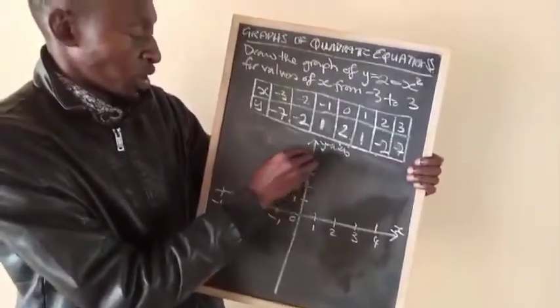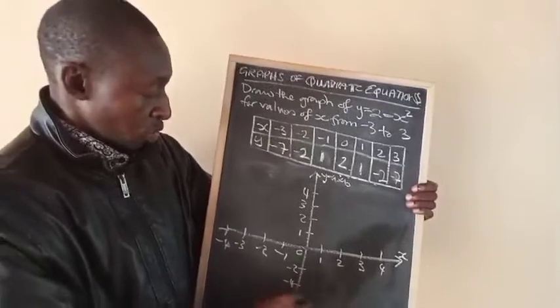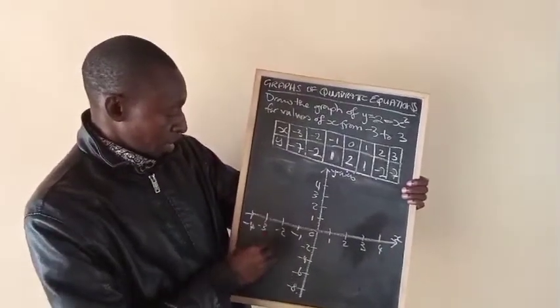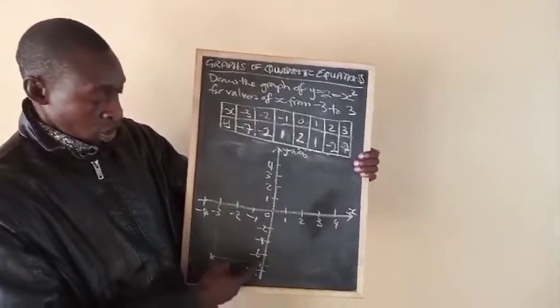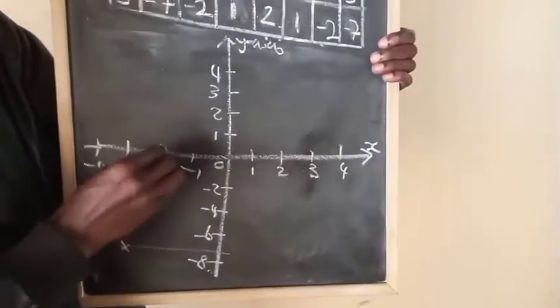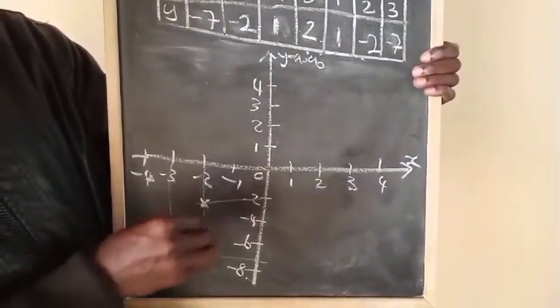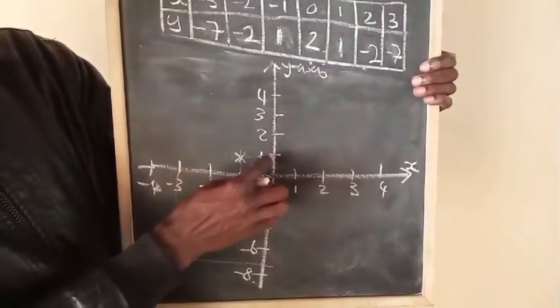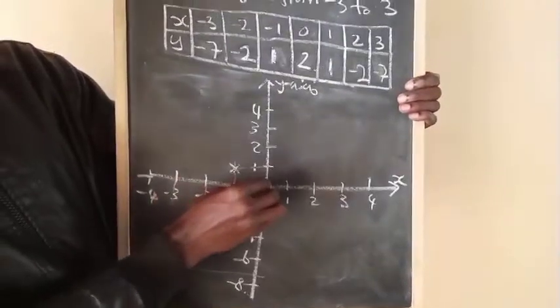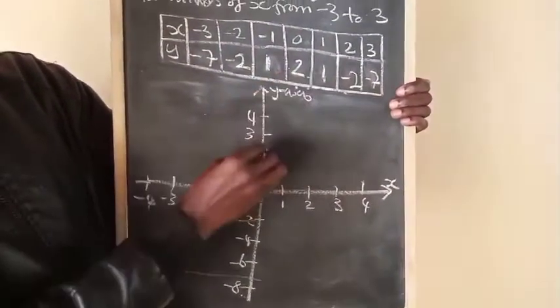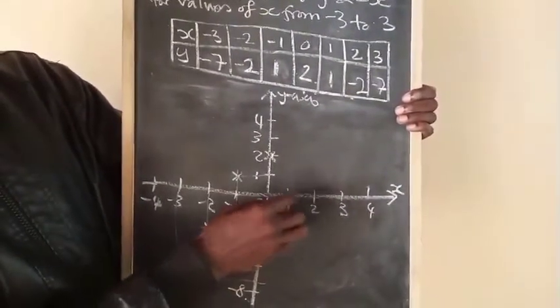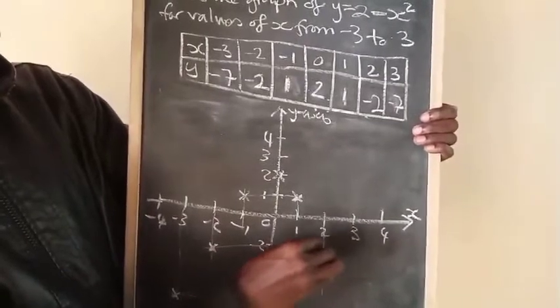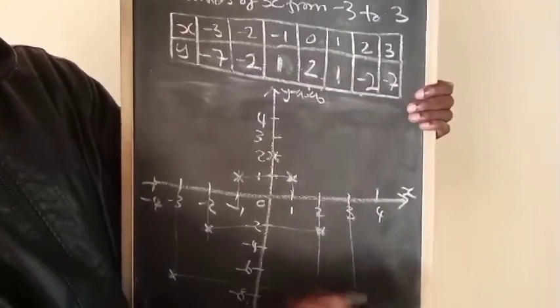Then I'll draw the x-axis: 1, 2, 3, 4, and then minus 1, minus 2, minus 4, minus 6, minus 8. Now let's plot the points. Minus 3 and minus 7: that point is between minus 6 and minus 8. Minus 2 and minus 2: mark that point. Minus 1 and 1: mark it. 0 and 2 is positive, mark it at 2. Then 1 and 1: mark it. Then 2 and minus 2: mark it. Then 3 and minus 7: mark it down there.